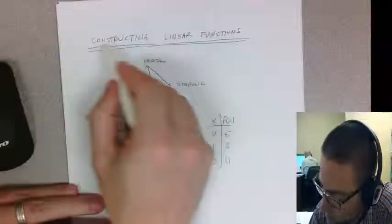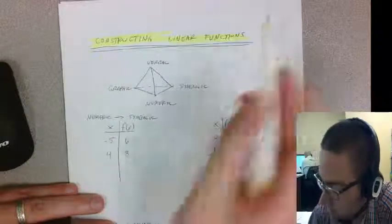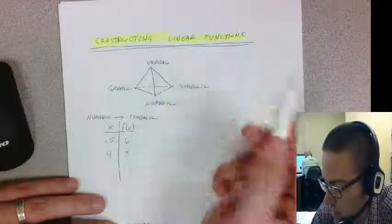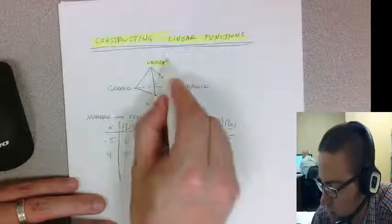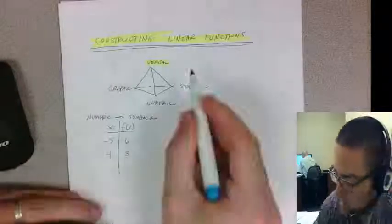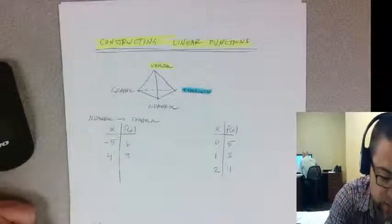In this topic we're going to talk about constructing linear functions. There are four different ways to represent these: verbal descriptions, symbolic descriptions, numeric descriptions, and graphical descriptions.